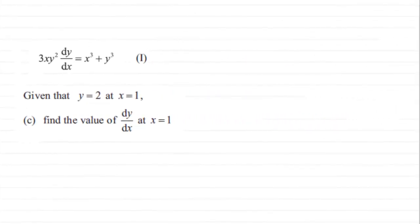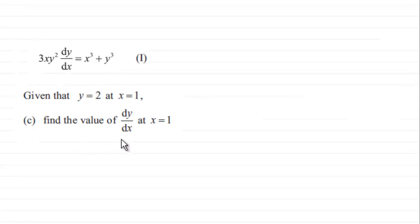For this part of the question we've got our differential equation here, number one, and we're given that y equals 2 at x equals 1, and we've got to find the value of dy by dx at x equals 1. To do something like this, it's very easy — all we've got to do is simply substitute our values in.